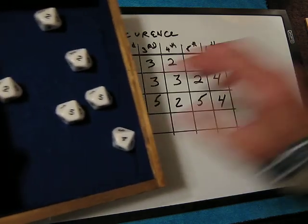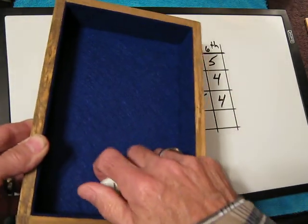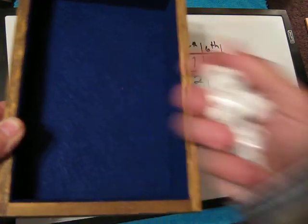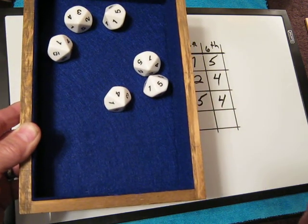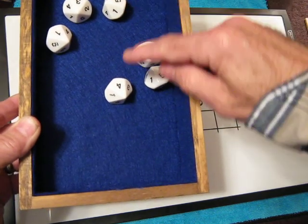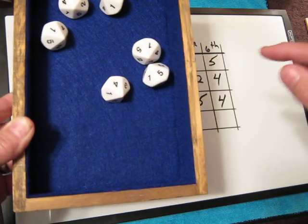Now we have one more row to go, so we'll grab them again and shake them off screen here, and throw them in and see what we get. Now we have a one, three, five, four, one, five.